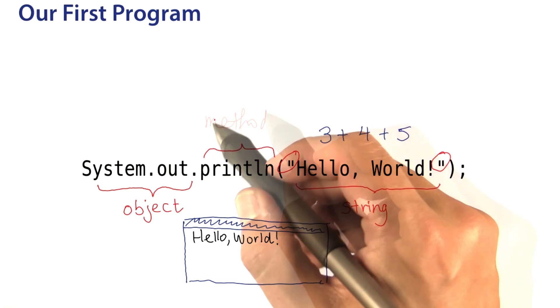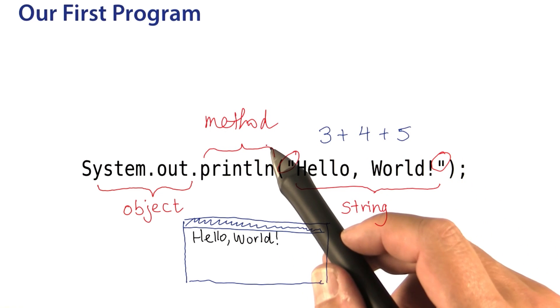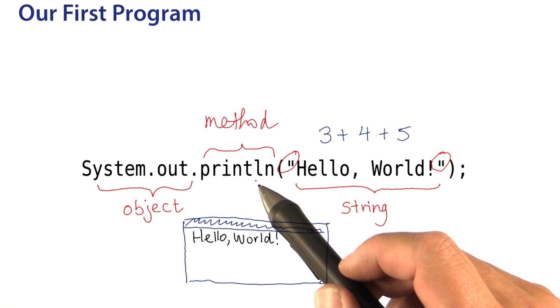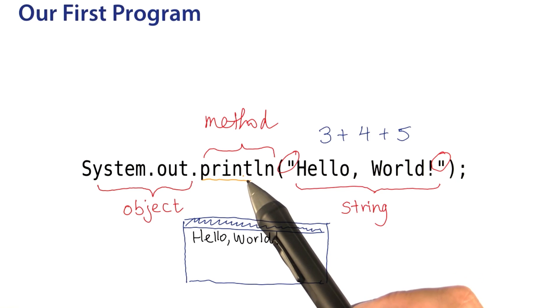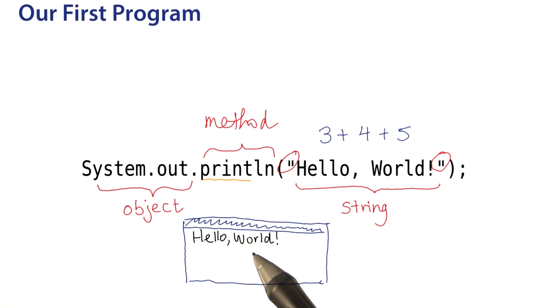Finally, this part is called a method. We'll talk much more about methods in the next lesson. For right now, just think of it as an instruction that's being executed. As you can tell from this part of the name, the instruction is to print something on the terminal window.